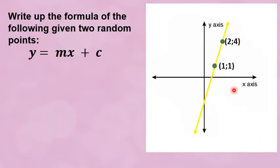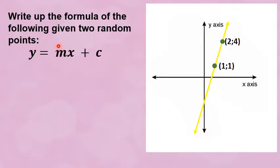With the previous slide we could easily read off the y-intercept, but over here the y-intercept has not been given and there's not even a grid to read it off. So we cannot start with the y-intercept — we have to start with finding the gradient. Scientifically written, the gradient m is the change of y over the change of x.